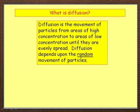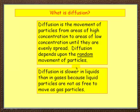Diffusion depends upon the random movement of particles. Particles are constantly moving and because of that they diffuse. Diffusion is slower in liquids than in gases — in gases it happens very quickly, in liquids it happens slower because liquid particles are not as free to move as gas particles. In solids, diffusion happens very, very slowly, if at all.